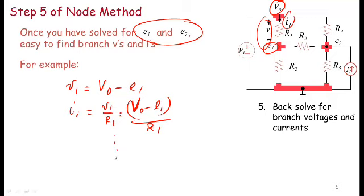I can go ahead and find all the VIs and IIs very straightforwardly from the node voltages. So most often when we analyze circuits, we just go ahead and find the e's, the node voltages, because we know we can very quickly find all the branch voltages and currents. And so we often stop at the node voltage step.